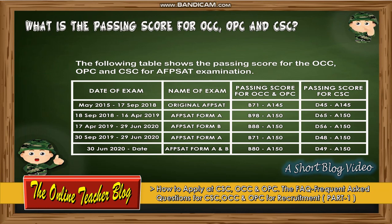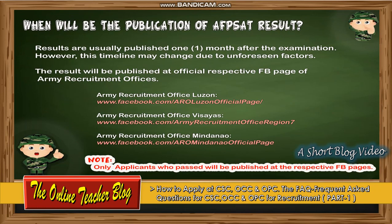For ABSET Form B: passing score for OCC and OPC is 88 over 150; passing score for CSC is 48 over 150. For ABSET Form A and B combined: passing score for OCC and OPC is 80 over 150; passing score for CSC is 49 over 150.